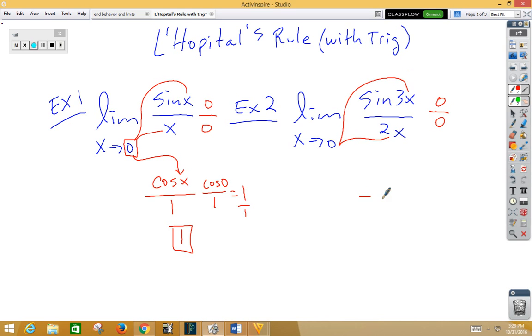This time, the derivative of the bottom is 2. Derivative of the top is a chain rule. That would be derivative of sine is cosine. Don't change the inside function. Multiply by the derivative of the inside function.